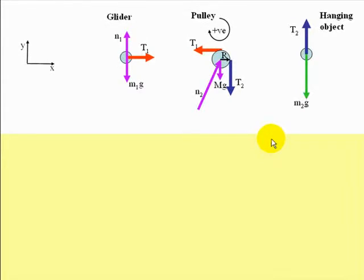For the glider, we have that the acceleration in the x-direction is equal to the tension in the string, which is also m₁a₁ₓ. Forces in the y-direction are totally balanced.